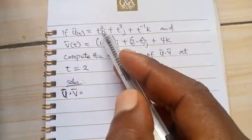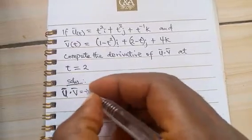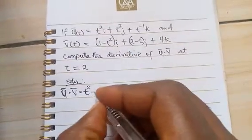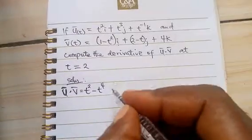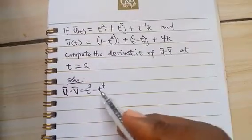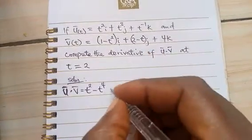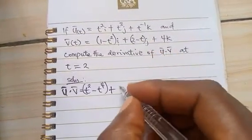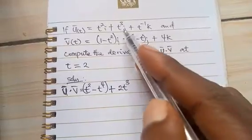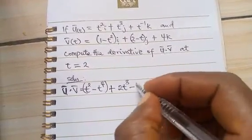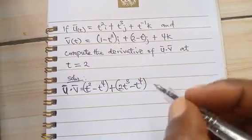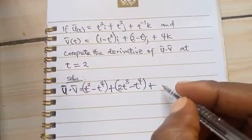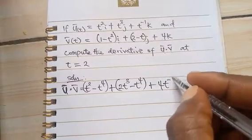So we have t² times 1 will give us t². We have this t² times t² will give us minus t^4. i times i is 1. So there's all these things times 1 will still be itself. So there's no need putting that. We'll say plus t³ times 2 will give us 2t³. t³ times t will give us minus t^4. We have t^(-1) times 4 will give us plus 4t^(-1).